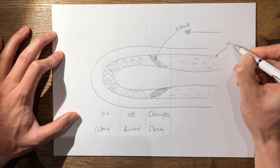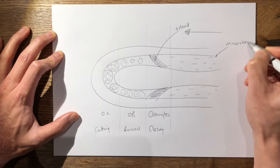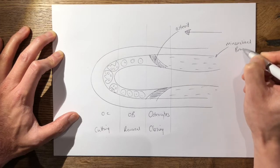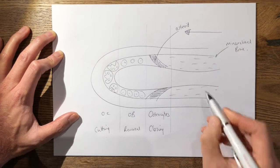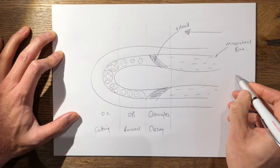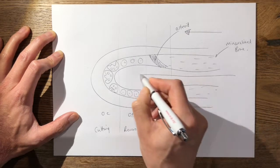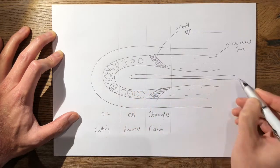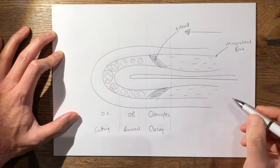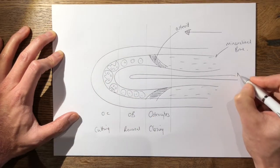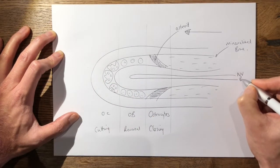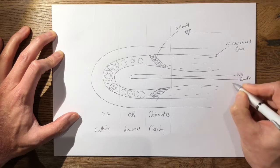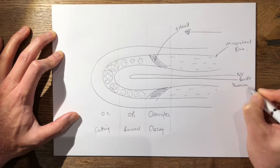So this is your mineralized bone. In the center of it all, you have your Haversian system which follows the direction of your cutting cone. This contains your neurovascular bundle—that's your Haversian system.